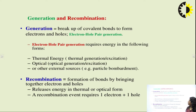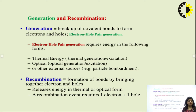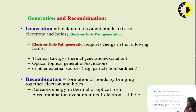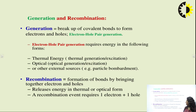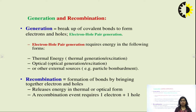The different forms of electron hole pair generation include thermal energy or thermal excitation and vibration, optical energy or optical generation and excitation, or external sources like particle bombardment. In the recombination process we have release of energy in the form of hν, and a recombination event only occurs when there is one electron and one hole pair available in the crystal lattice. In the electroluminescence phenomenon, several electrons and hole pairs recombine and produce light.